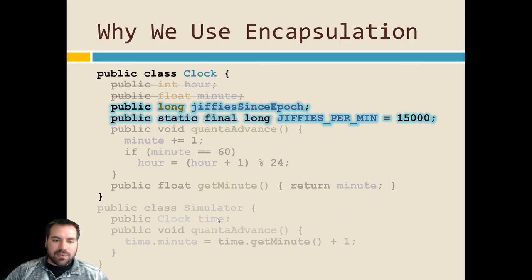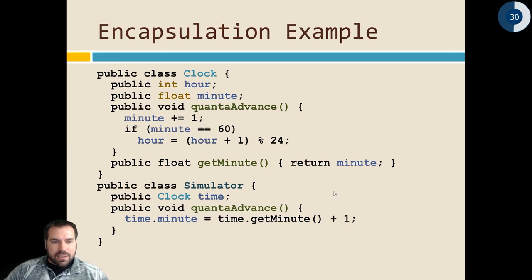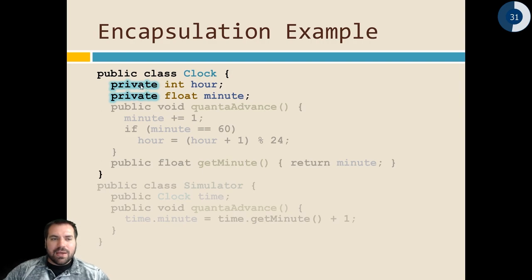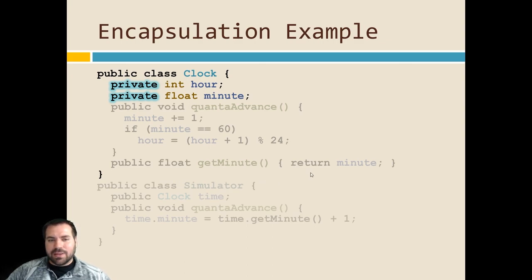If we change the standard, the same issue occurs — the minute variable no longer exists and code breaks. That's cascading failure: we changed an internal detail of one module and broke another. This is an example of content coupling — it depends on inner variables. So the fix: make these fields private. They're internal details; we don't want anybody changing them. Control changes through getters and setters. In this case we don't want anyone setting these directly — only advance time via `quantaAdvance` and expose the current minute via a getter.